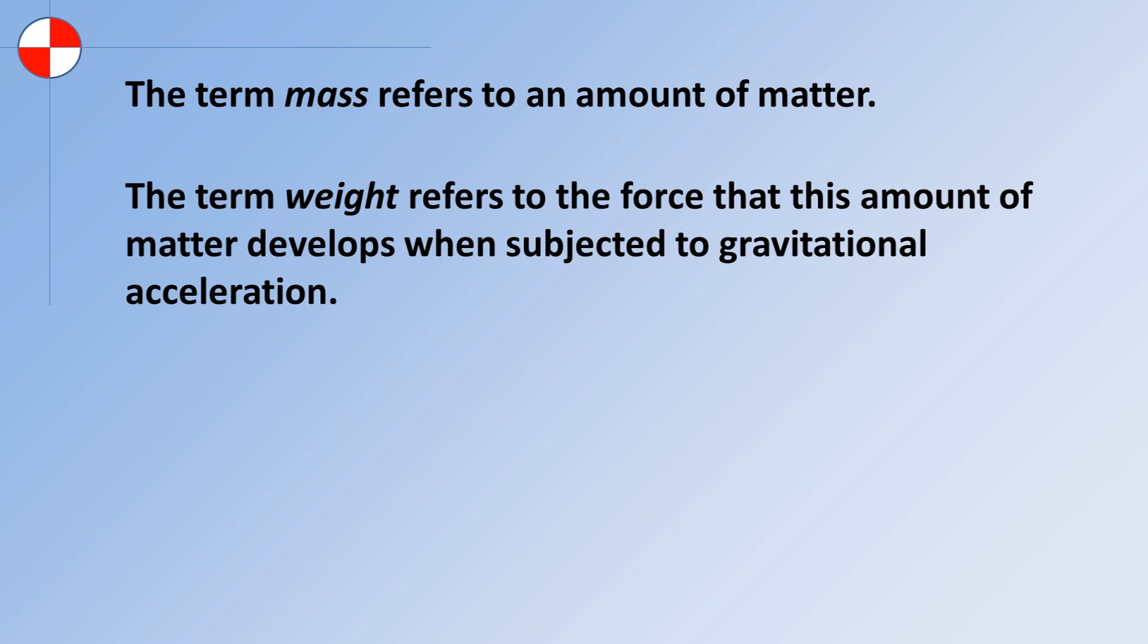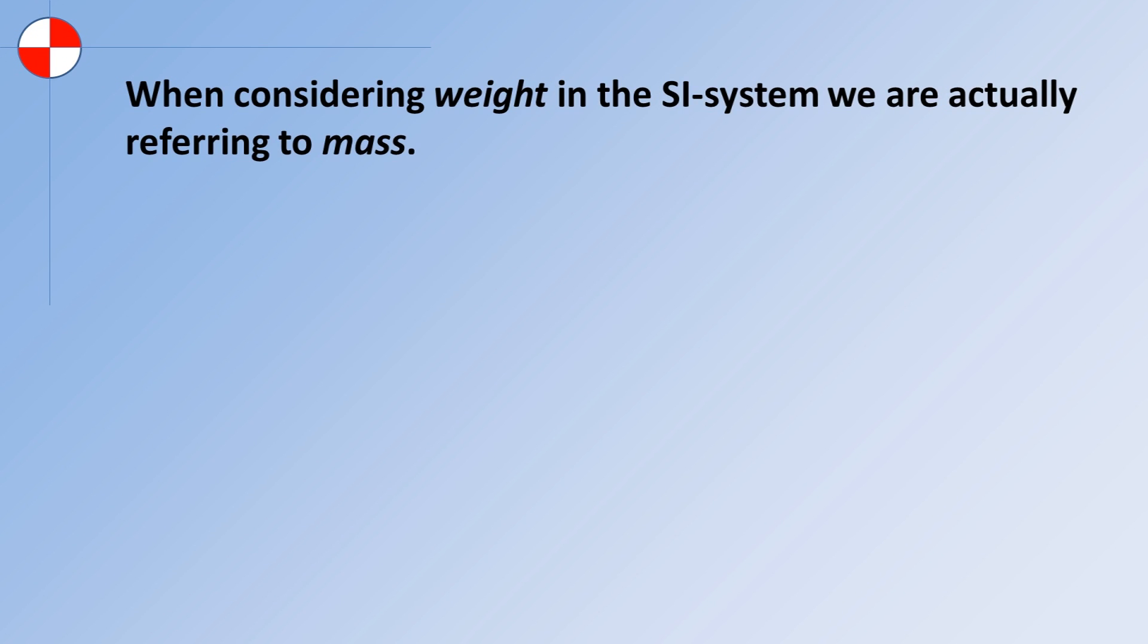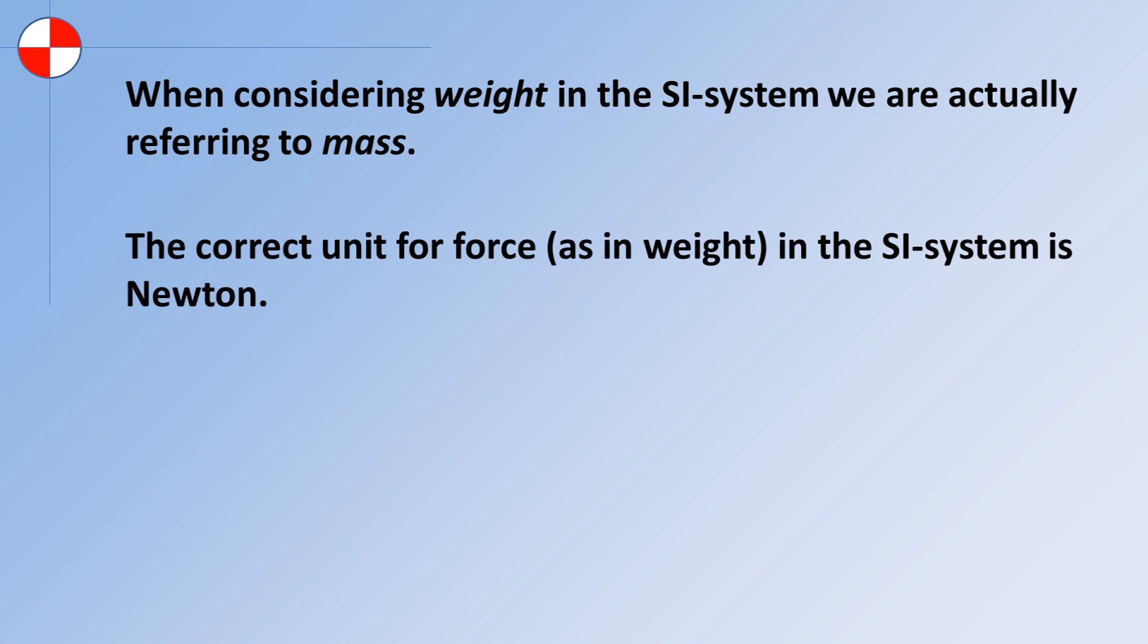In the calculations that follow, it is important to remember that the term mass refers to an amount of matter. The term weight, on the other hand, refers to the force that this amount of matter develops when subjected to gravitational acceleration. When considering weight in terms of the SI system, we are actually referring to mass. Thus, when we state an aircraft weighs, say, 2500 kilograms or kilos, or a person weighs 75 kilos, we are really stating the mass. Of course, the unit for force in the SI system is Newton. It is important not to be confused by this erroneous use of these terms.